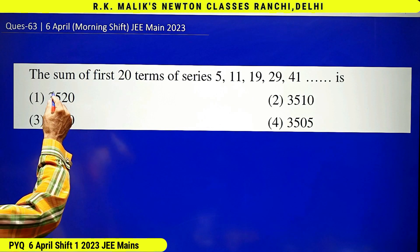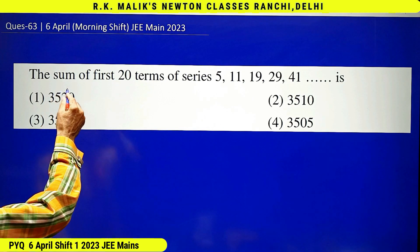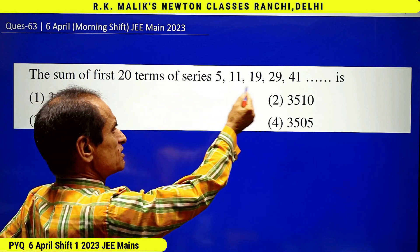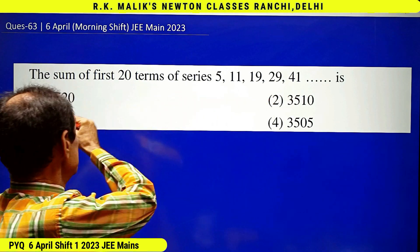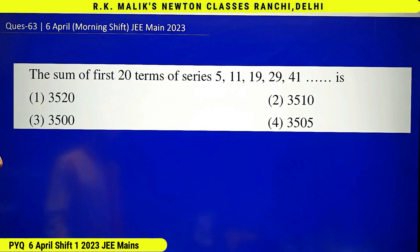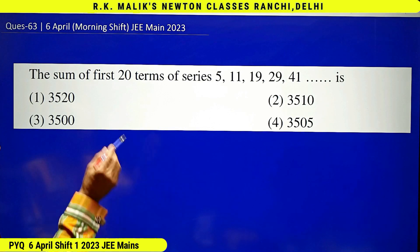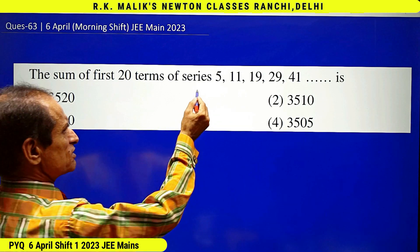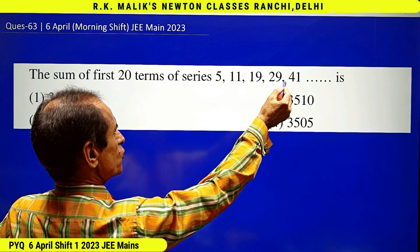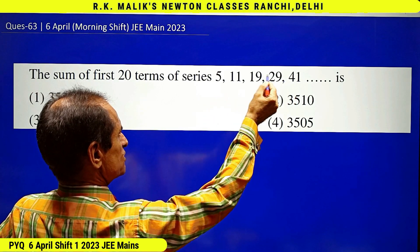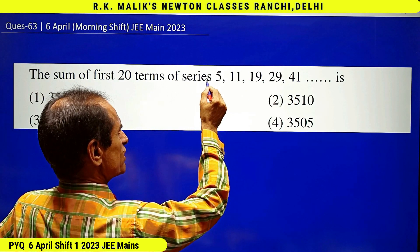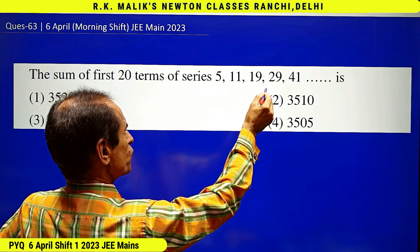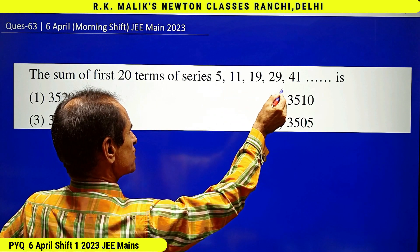In this question, it is given that the sum of first 20 terms of the series — you have to find the correct choice. Actually, there is a mistake in this question because this is a sequence, not a series. We use the word 'series' when plus or minus signs are there; when commas are there, it is called a sequence.